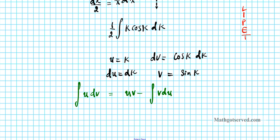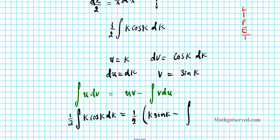So one-half times the integral of k cosine(k) dk becomes: one-half times k sine(k) minus the integral of sine(k) dk.